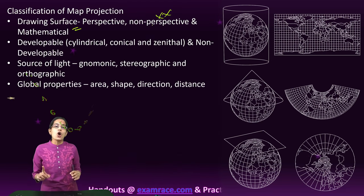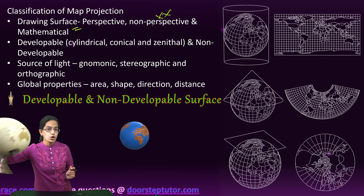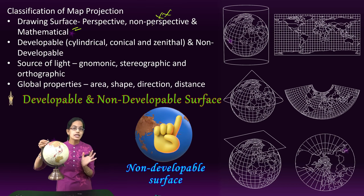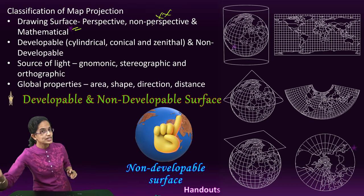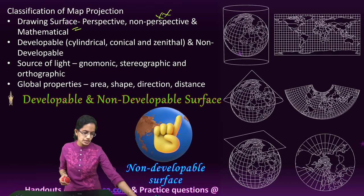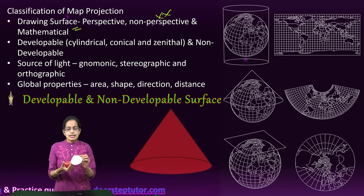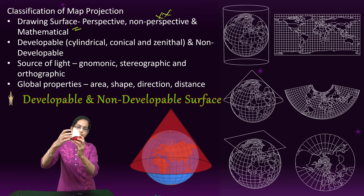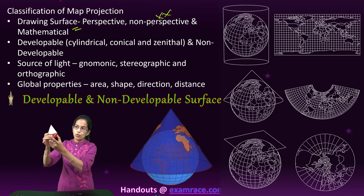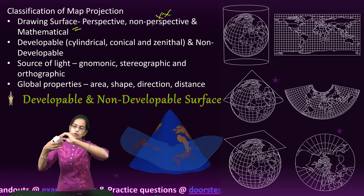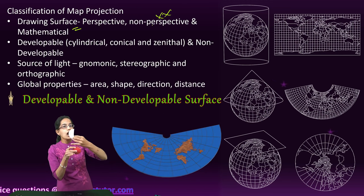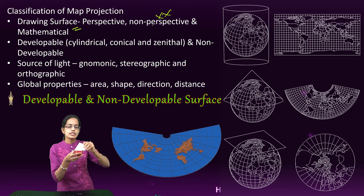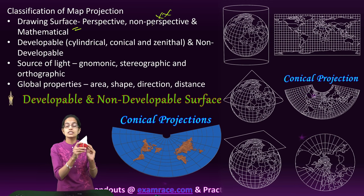The next classification is based on developable or non-developable surfaces. A globe is a non-developable surface — it cannot be developed on a flat sheet of paper with good accuracy. Developable surfaces can be defined in numerous ways. For example, if I take a cone and place it on the earth, I can represent the region covered by the cone on a sheet of paper by opening it up. This is known as conical projection.